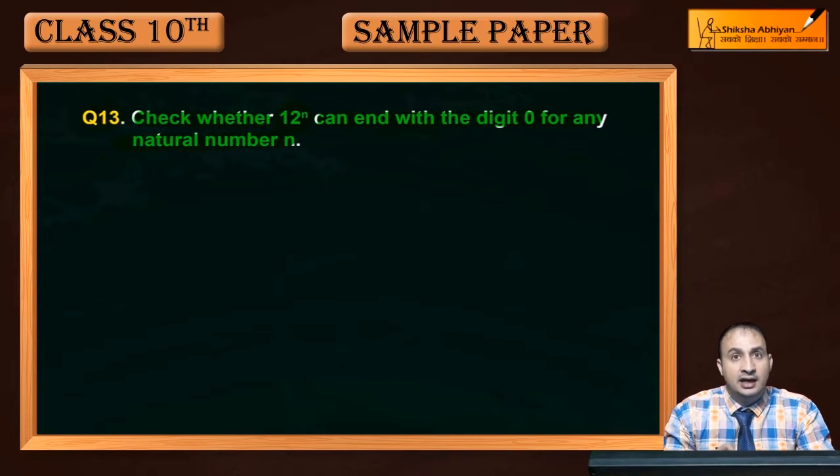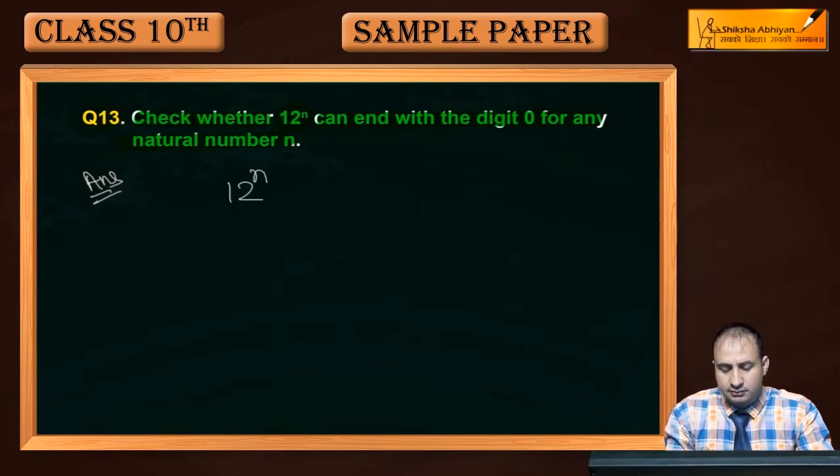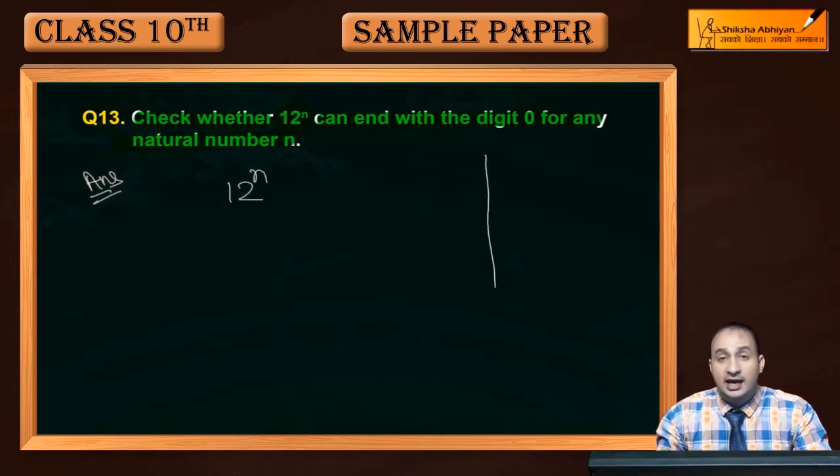The question is asking: for 12 to the power n, for any value of n, can it end with the last digit being 0? Is this possible?